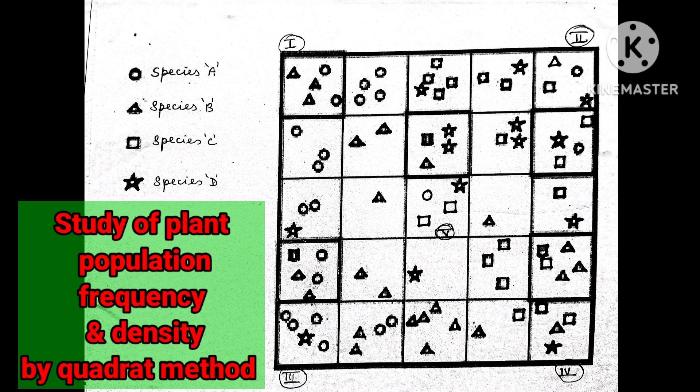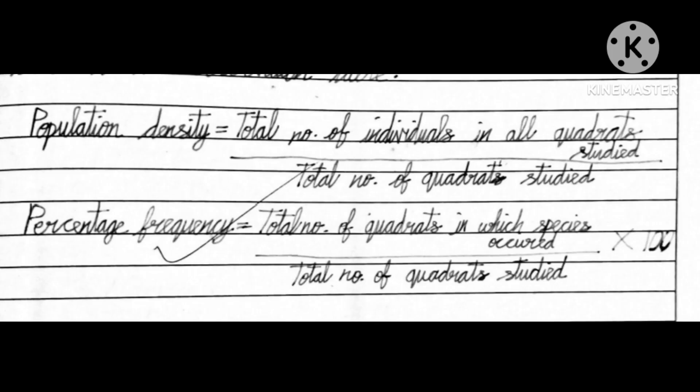Here we have to count, for example, first quadrat towards the left side top one. Species A circle 2 and species B is 3. In that way we have to count the number of species in all five quadrants. Then you have to plot that in the observation table given. Then later the formula given to be followed.